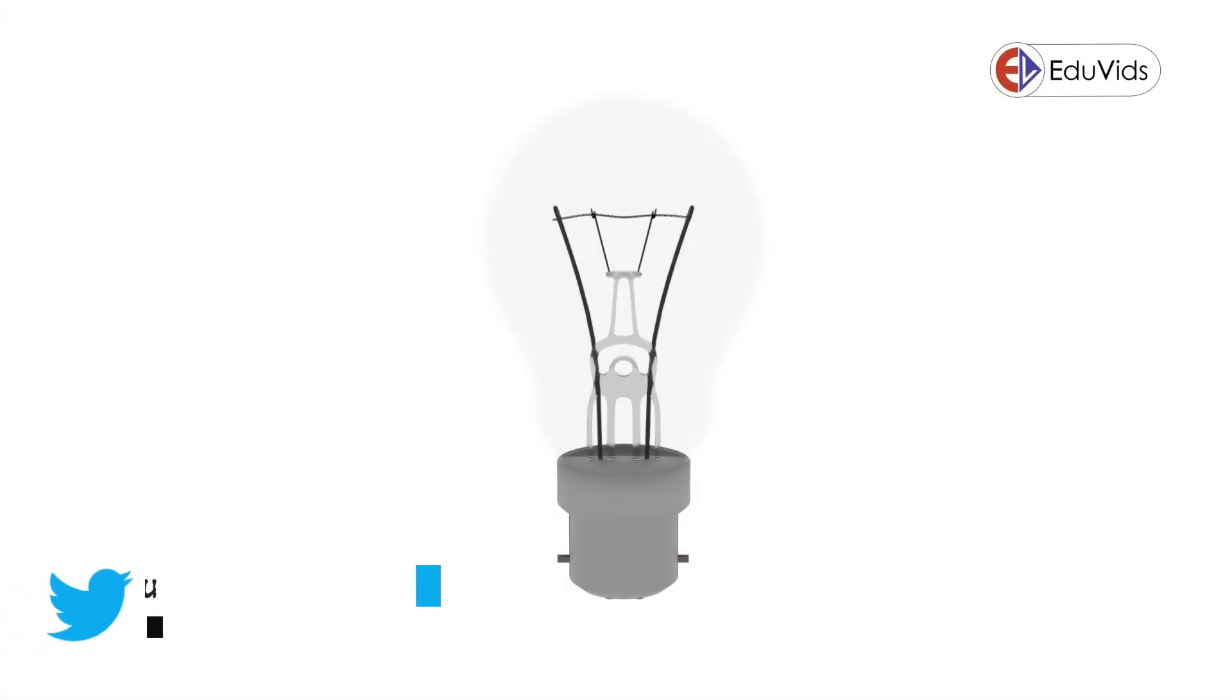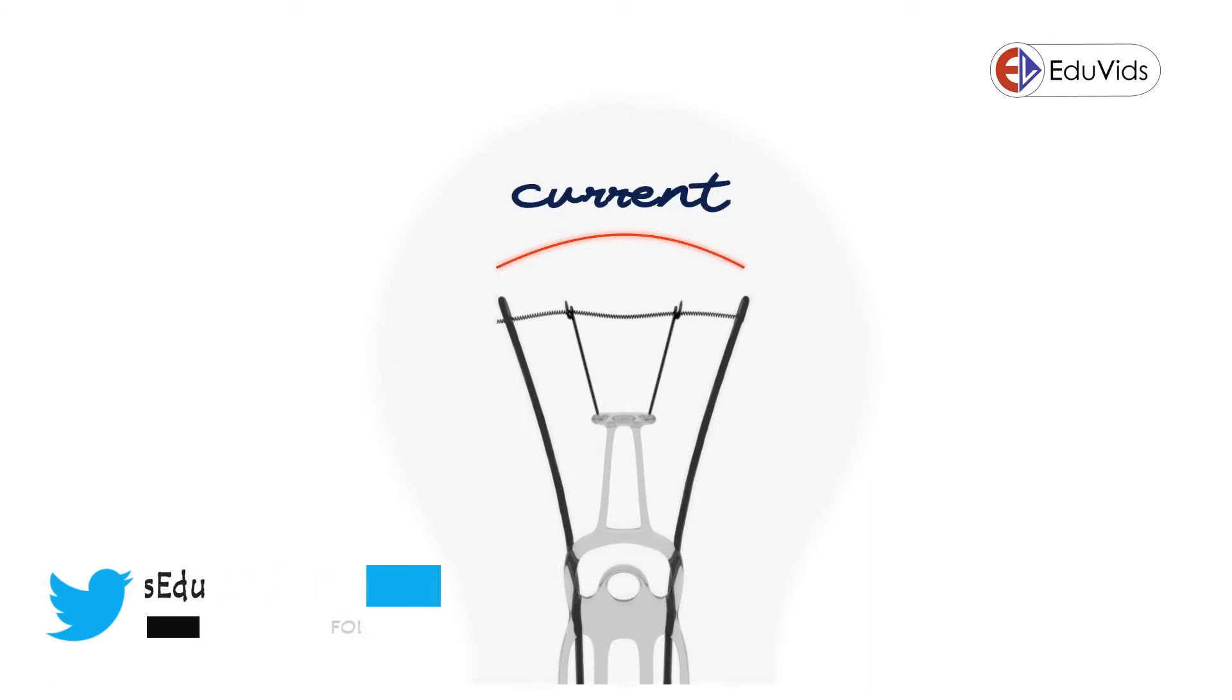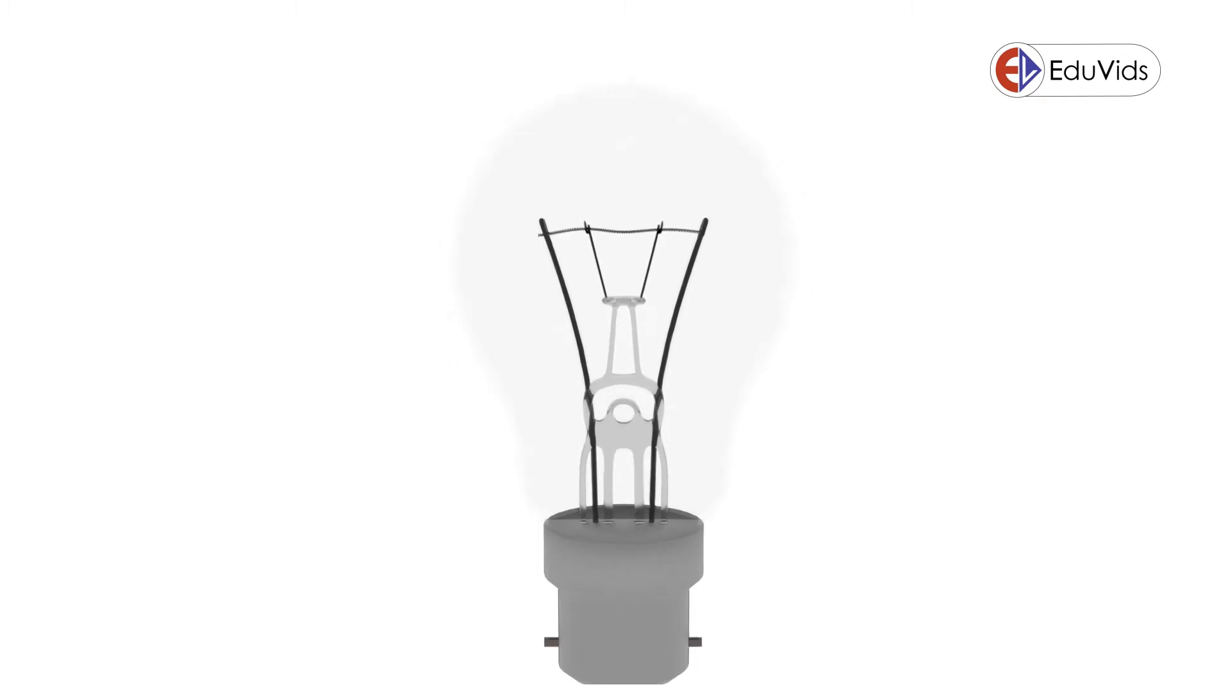An incandescent bulb works on the principle of incandescence, a general term meaning light produced by heat. In an incandescent type of bulb, an electric current is passed through a thin metal filament, heating the filament until it glows and produces light.